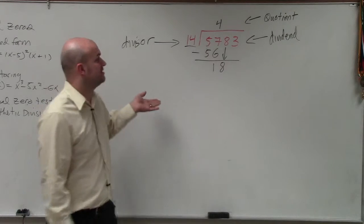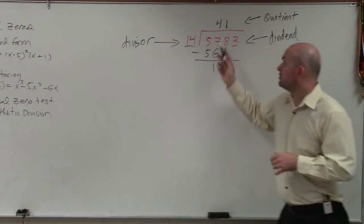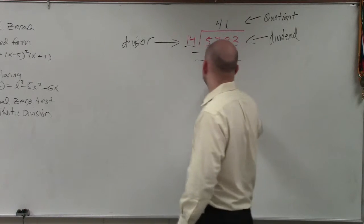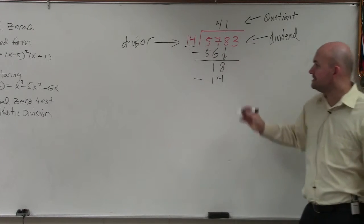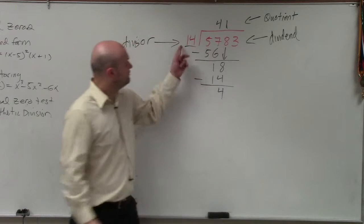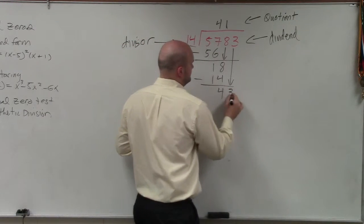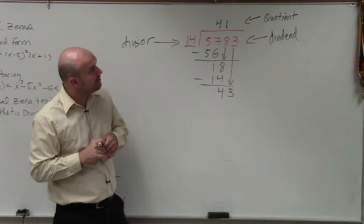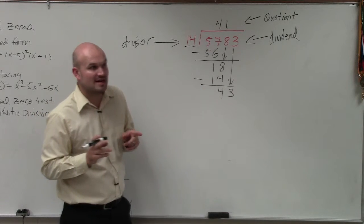14 does divide into 18 one time, so I write a 1 up here. Then I multiply 1 times 14 and write it below. Again, you subtract your last two rows. 18 minus 14 gives me 4. 14 does not divide into 4, so I bring down the 3. 14 does divide into 43. Wait, 14, 28, 3 times would be 42, right?